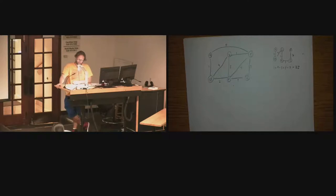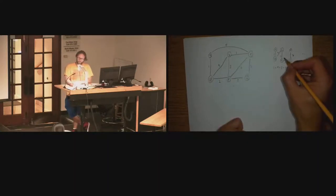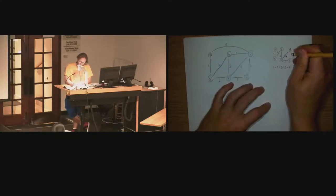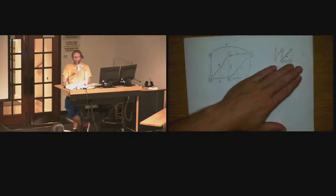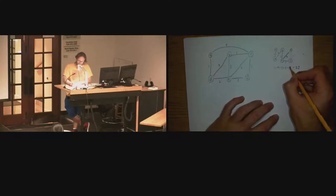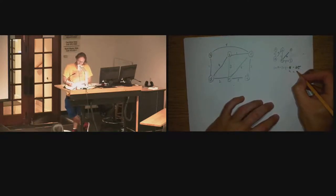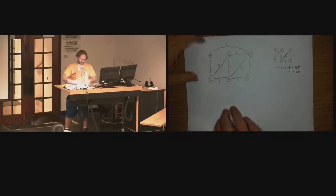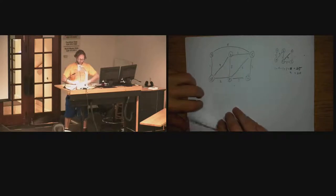What if instead of deleting the edge with weight 7, I restore that and delete the one with weight 4? Wait — what if I delete the 7 and keep the 4? Now, is that a spanning tree? It spans, it's a tree, so it's a spanning tree. But instead of 7 I have 4, which gives only a weight of 20. That's even better. Can you do better than that? That's where we need an algorithm.